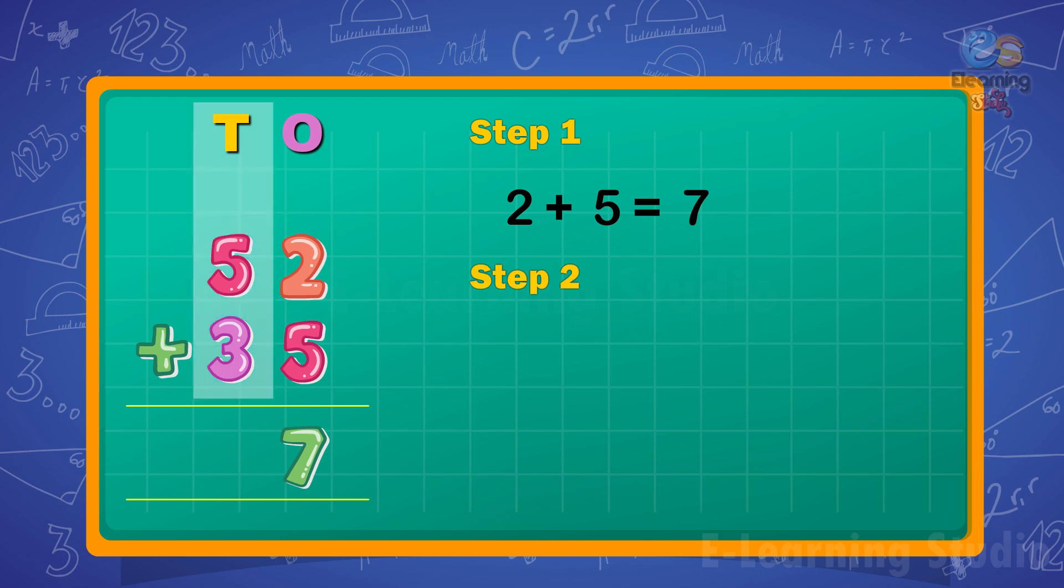add the tens. 5 plus 3 equals 8. Write 8 under the tens column. Thus, the sum is 87.